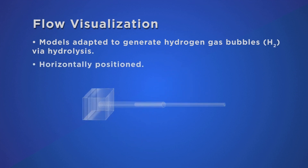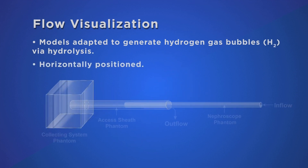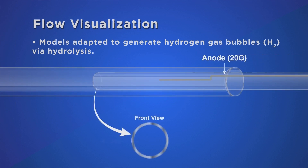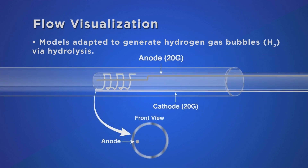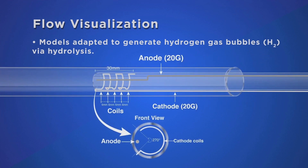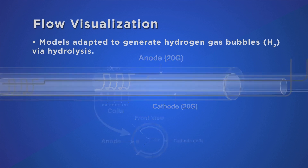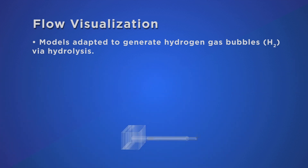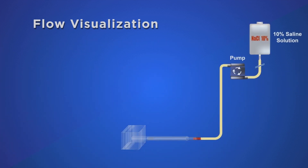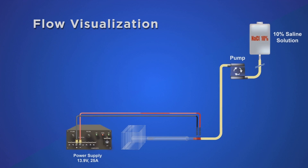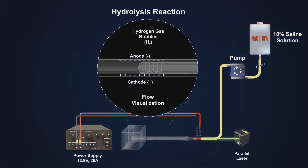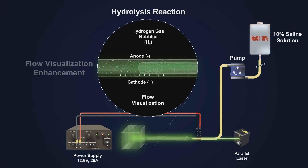To generate hydrogen gas bubbles, the models were adapted to perform hydrolysis. Utilizing two 20-gauge wires, the anode and cathode were positioned inside the nephroscope. With the addition of a pump, we delivered 10% saline as the irrigant solution and hydrolysis was started with the power supply. A green laser was positioned parallel to the model, enabling flow visualization for the hydrogen gas bubbles.